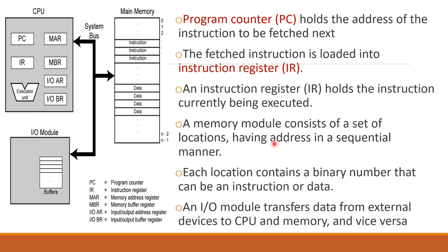The memory module consists of a set of locations having addresses in a sequential manner. Each location contains a binary number that can be either an instruction or data — a sequence of 0s and 1s. An IO module transfers data from an external device to the CPU and memory.